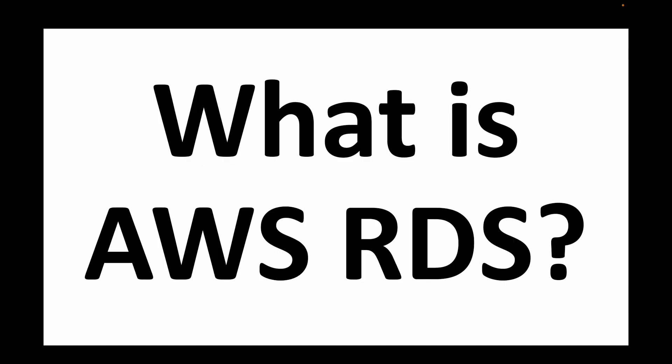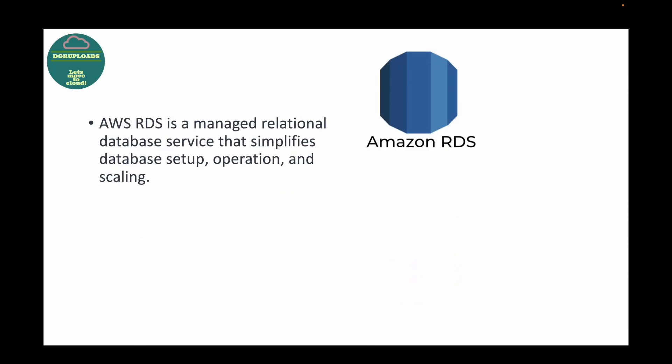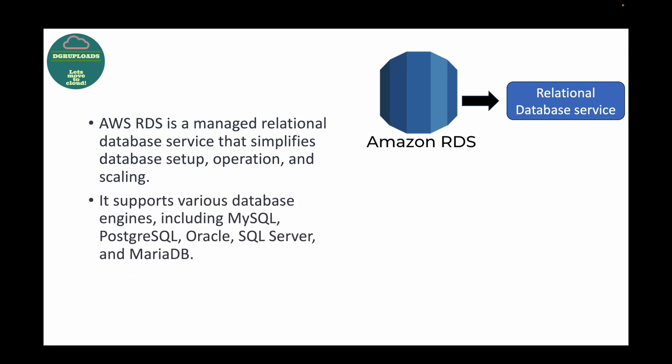The first question is: what is AWS RDS? RDS stands for relational database service and it's one of the managed database services in AWS. This service simplifies your database setup, operation, and scaling. With this service you can quickly set up a database and start using it with your application — it's a fully managed database provided by AWS.